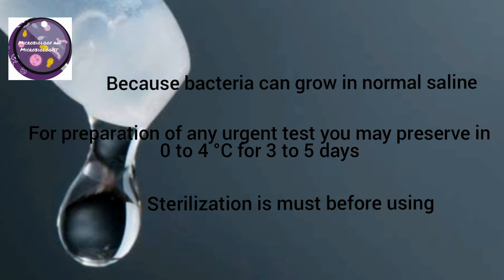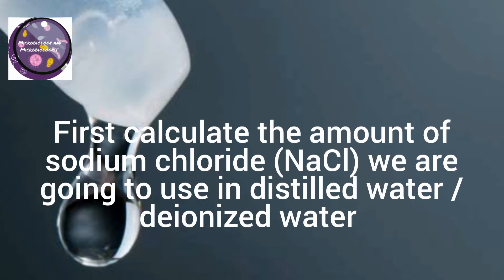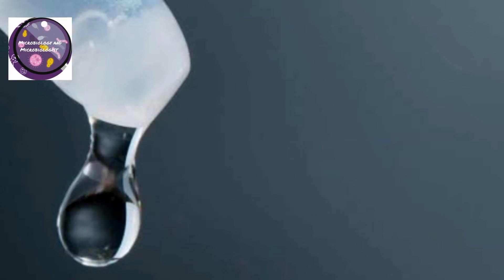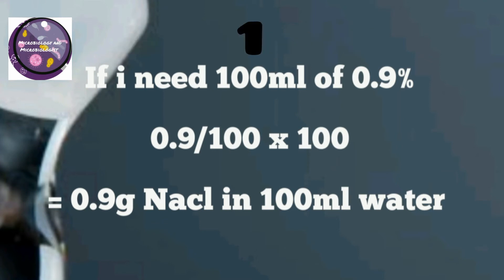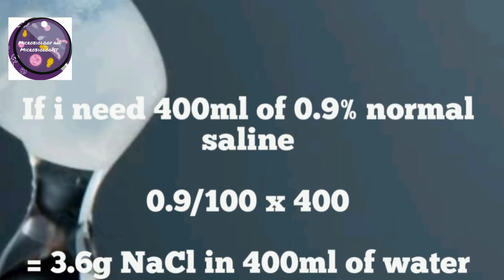Let's start preparing normal saline solution. First, you have to calculate the sodium chloride amount we are going to use in distilled water or deionized water. Here are some examples: if I need 100ml of 0.9% normal saline, I need 0.9 gram of NaCl. For 400ml of 0.9% normal saline, 3.6 gram NaCl is needed for 400ml of water.